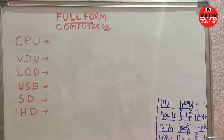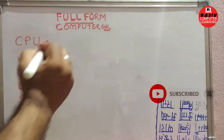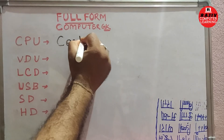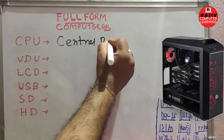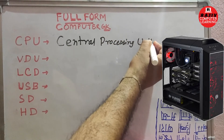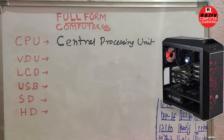Let us learn some computer related terms and the full form of some terms. CPU stands for Central Processing Unit. The Central Processing Unit is the main part of the computer. Inside the CPU, all the processing of data is done.